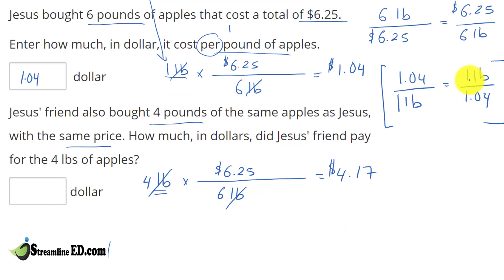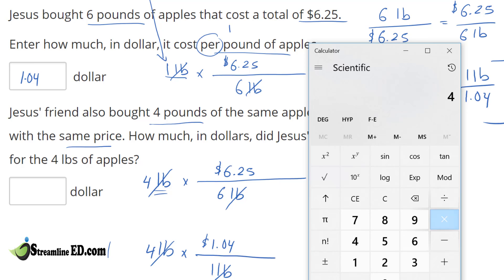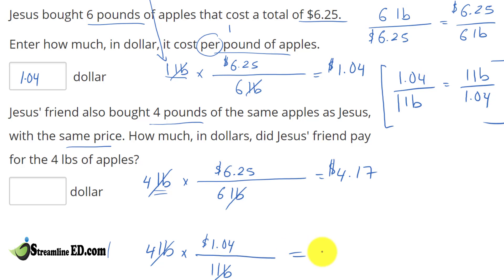Now let's try with the second rate — it is the same rate, just expressed in a different quantity. We have 4 pounds of apple times $1.04 per 1 pound. Look what happens: pounds cancel out. Using the calculator: 4 times 1.04 also gives us $4.16, which is again equivalent to $4.17. Both methods give the same answer.